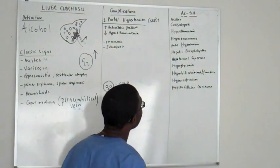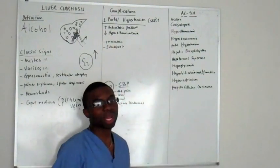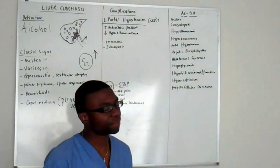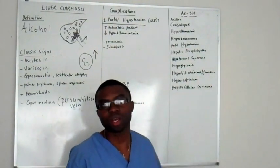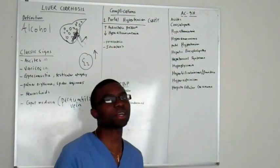First is ascites, which we already talked about. Coagulopathy - the liver makes all your clotting factors. If the liver is damaged, you can't make clotting factors. Your PT, PTT, and INR will be elevated.